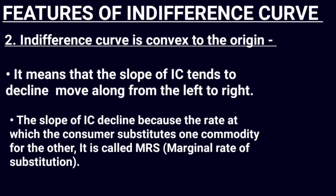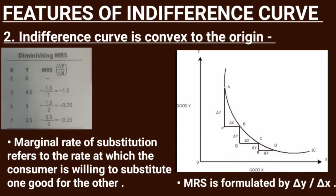The slope is declining, and the rate at which we consider this is the concept of MRS — Marginal Rate of Substitution. MRS describes how consumer behavior changes when one good substitutes for another: the satisfaction from one good decreases while the other increases. The IC curve is convex to the origin because MRS is diminishing.